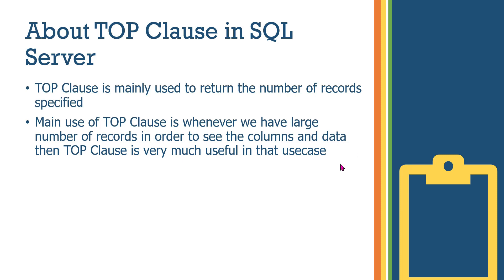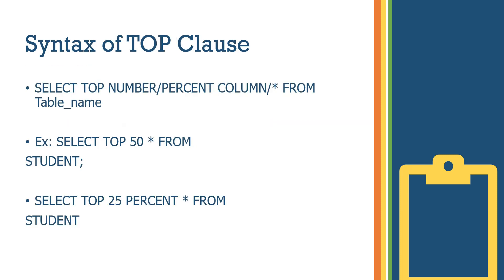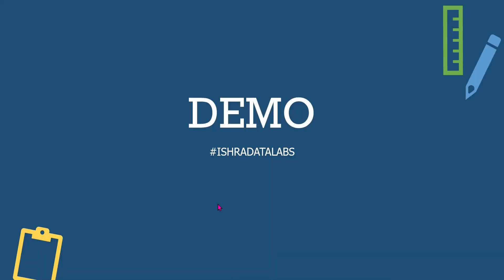The main use of TOP is when you have a large number of records and want to view a portion of them. The syntax is: SELECT TOP followed by a number — such as 100 or 200 records — or a percentage like 10 percent, 20 percent, or 50 percent, then the column names or star, FROM table name. For example, SELECT TOP 50 records from a student table, or SELECT TOP 25 PERCENT star to get 25 percent of all records.